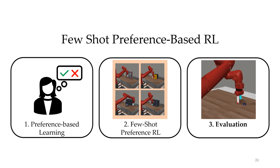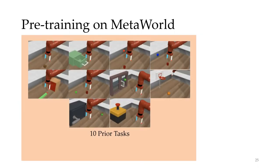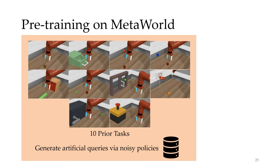Finally, let's see how this approach works in practice. We evaluate our approach on the MetaWorld benchmark by assembling a preference dataset using 10 prior tasks and noisy policies to collect a multi-task preference dataset. We then pre-trained a reward model, which we will use to adapt to new tasks downstream.